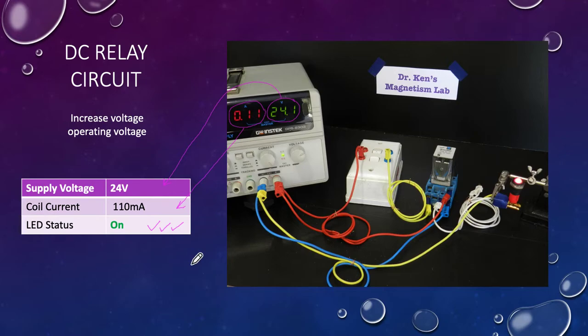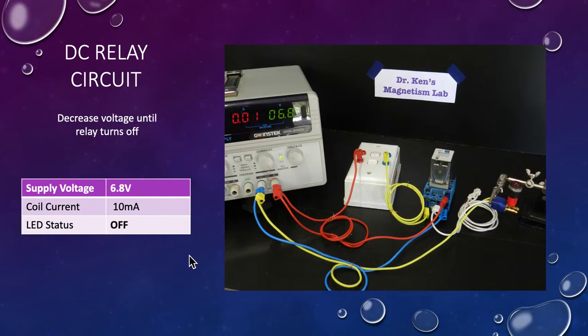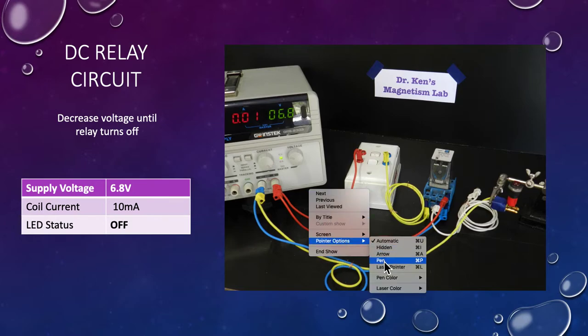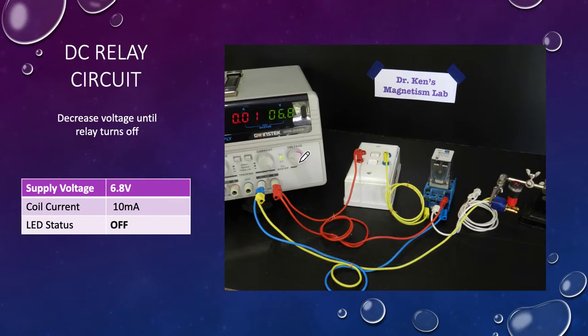The next step is now to wind the voltage down until the relay just drops out. I simply took the voltage control and wound it back until I got the dropout point. It dropped out at 6.8 volts at the 10 milliamp point. You can now see my LED has certainly clearly gone off, indicating that the relay has dropped out.